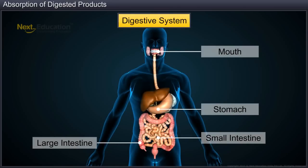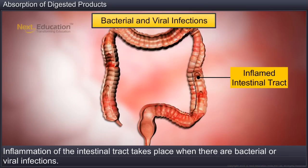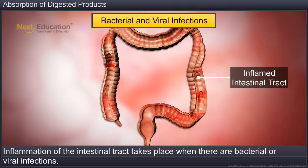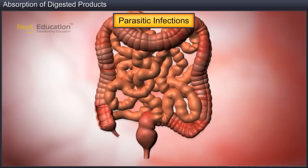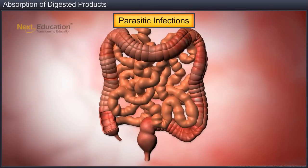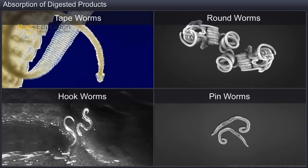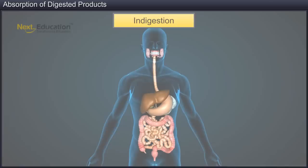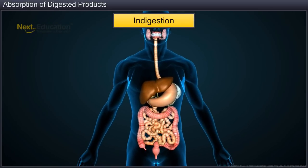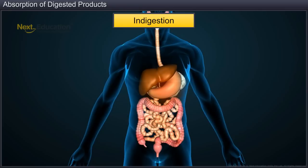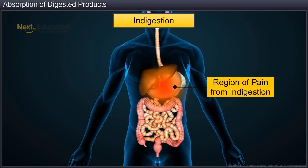If the digestive system does not function as smoothly as it should, it results in different types of disorders. Inflammation of the intestinal tract takes place when there are bacterial or viral infections. Parasitic infections are caused by tapeworms, roundworms, hookworms, pinworms and others that usually infect the intestine. Indigestion takes place when food is not properly digested and one experiences a feeling of fullness, pain or heartburn.